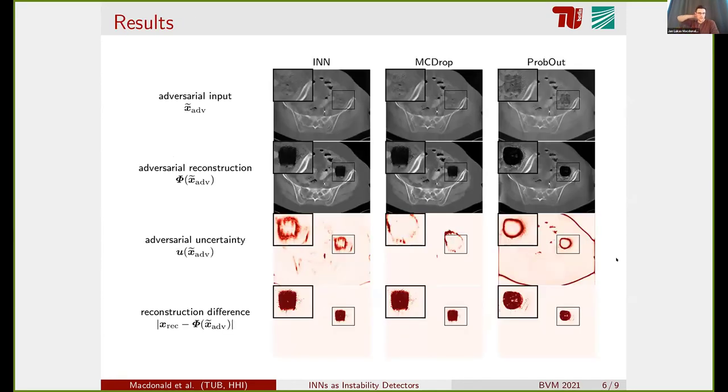Let's look at the results for the adversarial example first. In the top row, we see the modified inputs with the small perturbations. The row below shows the reconstructions where the black square clearly appears. In the last row, we see the actual change the perturbation had on the network reconstruction.